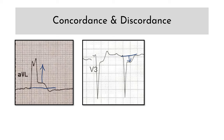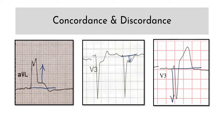Even discordant ST depression can be useful, but that is beyond the scope of today's talk. We are mainly bothered about ST elevation because we are looking for acute coronary occlusion or acute MI. Discordant ST elevation is when you have a predominantly negative QRS with a significant ST elevation. Some degree of discordant ST elevation is normally seen in LBBB — this is referred to as appropriate discordance. But excessively discordant ST elevation should not be seen in LBBB. So how do you define excessive discordance? We will discuss this shortly.